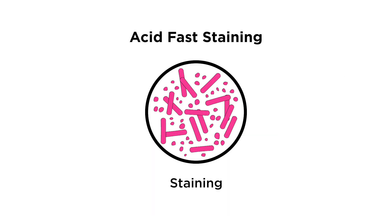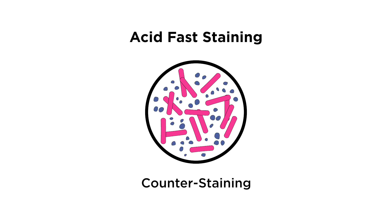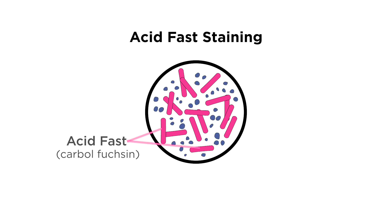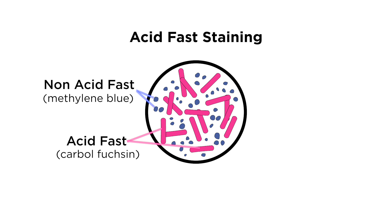After staining, decolorizing, and counter-staining, any acid-fast bacteria present will appear as brilliant pink to red. Other bacteria present will be seen as blue if using methylene blue to counter-stain, or green if using brilliant green to counter-stain.